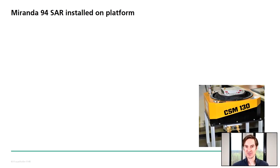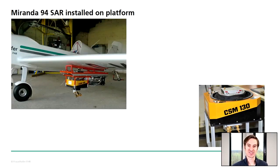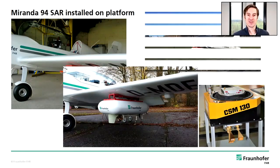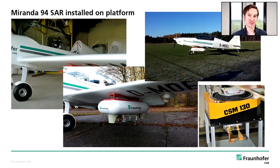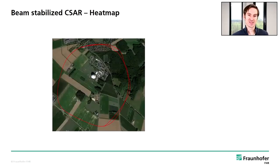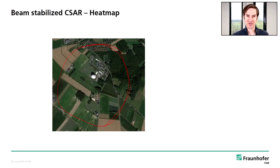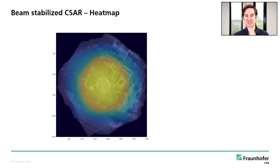This is how the system looks: the front end is installed in the gimbal mount. The whole SAR sensor is installed beneath the wings with front and back end antennas. We simply close the pod and we are ready to fly — the entire system is installed in this pod at a weight of 25 kilograms. In our first beam stabilization test, the red flight track of the plane is shown, with our institute and its big radar at the center. Plotting the illumination pattern from this measurement, you can nicely see that the system is working and we can collect 360-degree data regardless of the flight track.